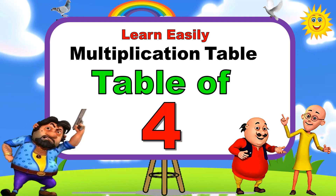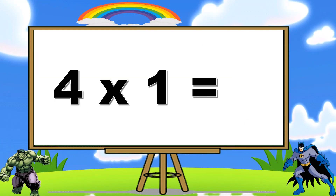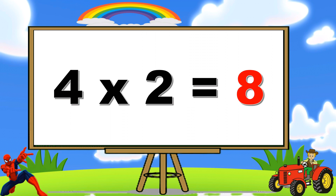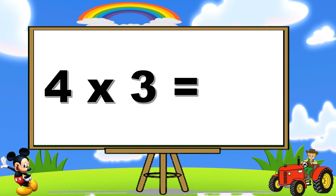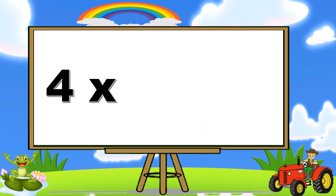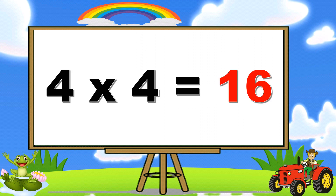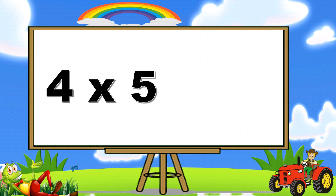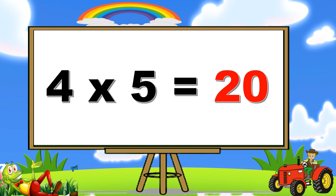Table of Four. Four ones are four. Four twos are eight. Four threes are twelve. Four fours are sixteen. Four fives are twenty.